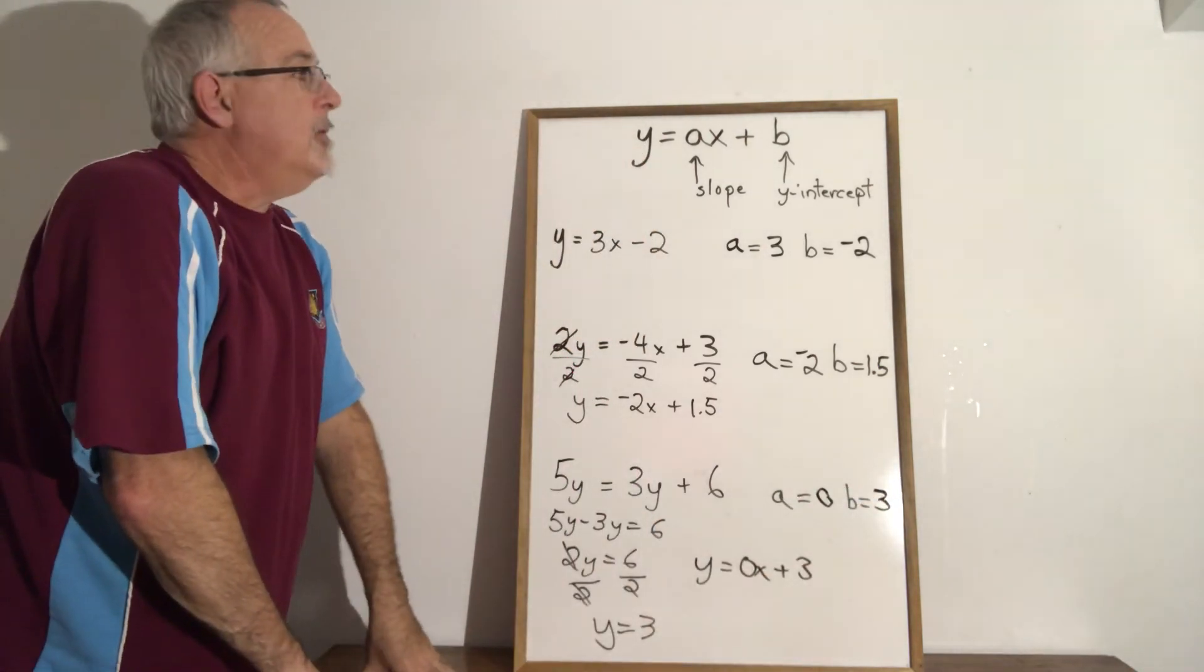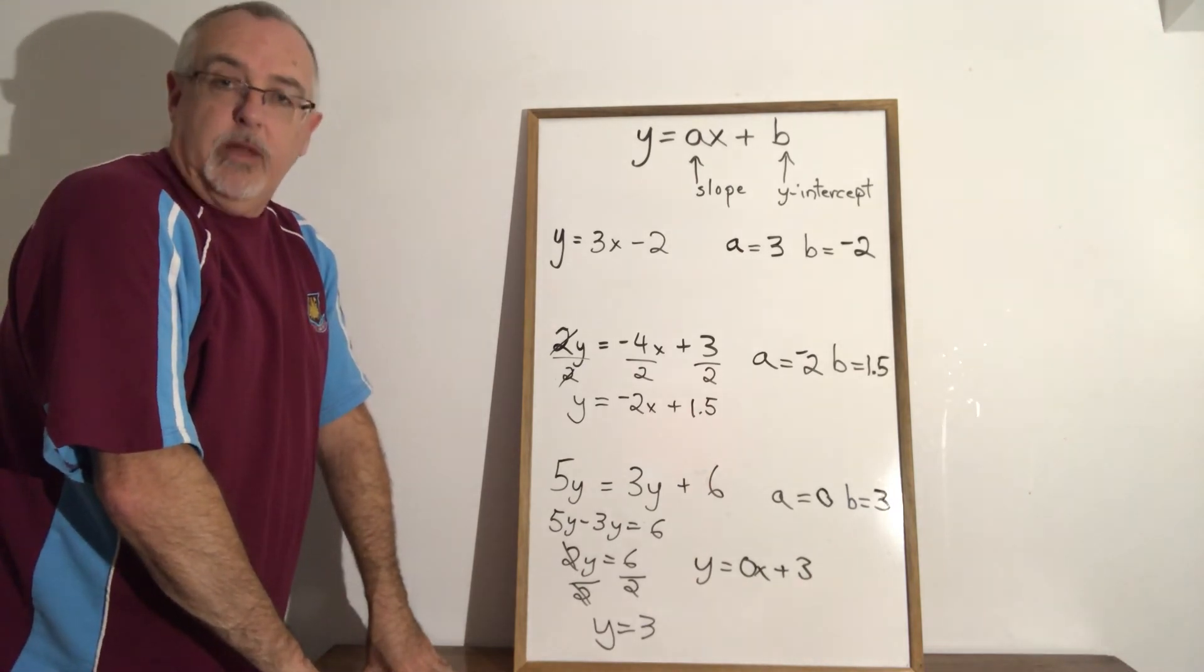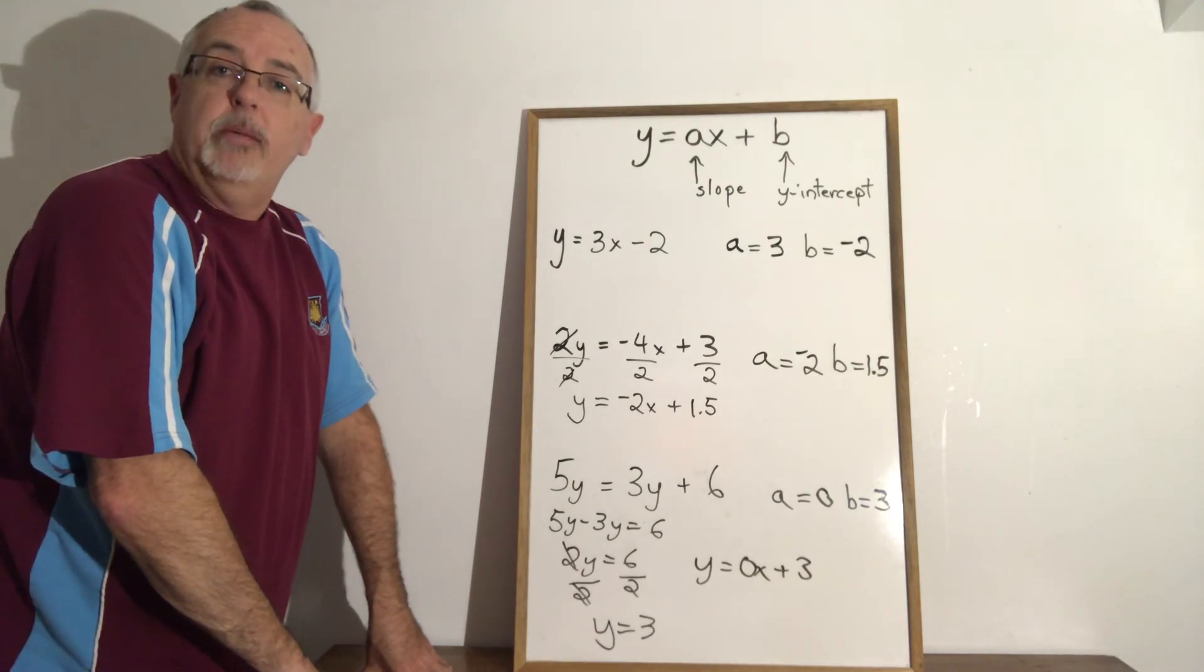This is how we can use the y equals ax plus b form to find the slope and the y-intercept for a straight line. And that is today's daily dose of math. Please like, subscribe, and share.